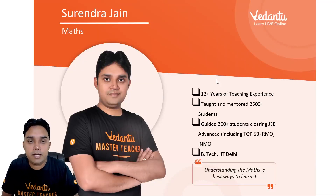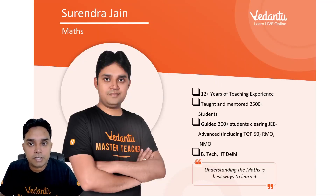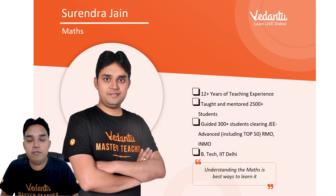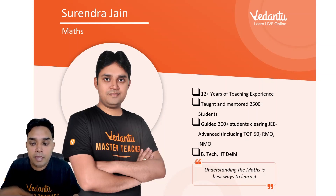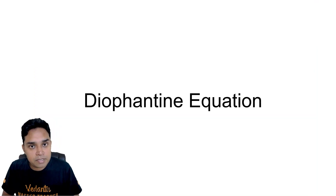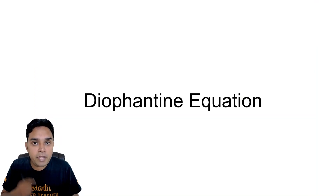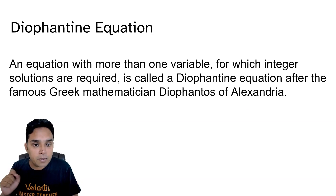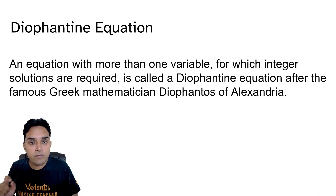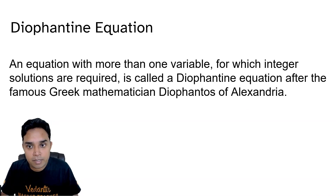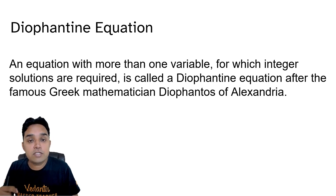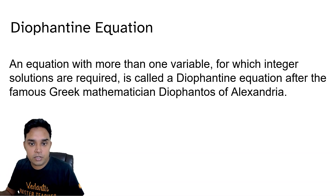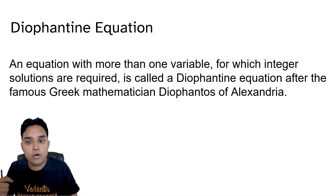Hello everyone, I am Surendra Jain, master teacher at Vedantu. I have brought a series of topics for KVPY SA stream, and we are starting with the number system topic, in which one very important subtopic is the Diophantine equation. A Diophantine equation is actually an equation involving more than one variable for which integral solutions are required. It was named after the Greek mathematician Diophantus of Alexandria.